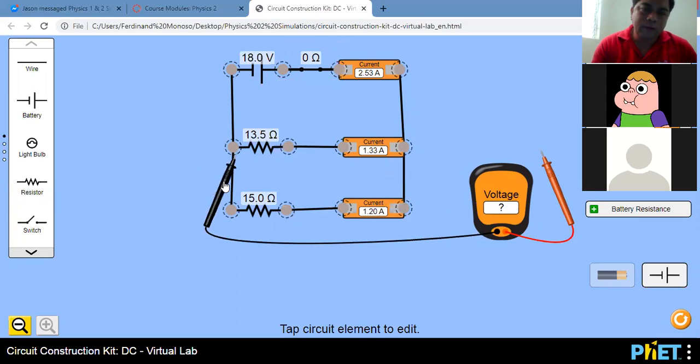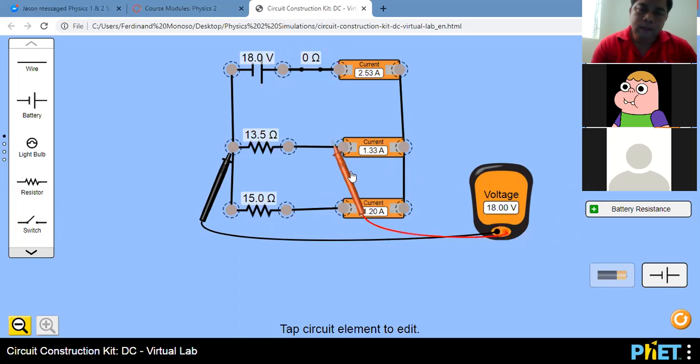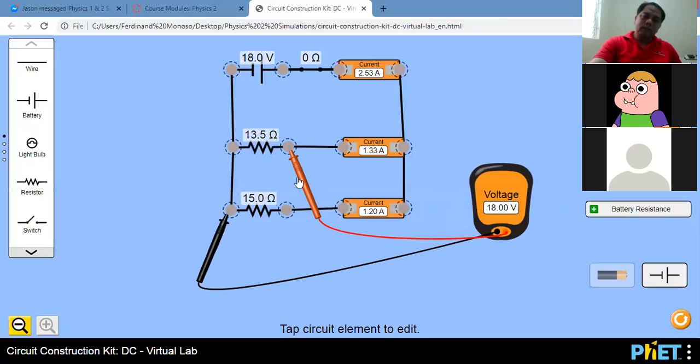Next, we will check our voltage in our resistance one. So this is our voltage for resistance one. We have 18 volts. So V1. Our V2 is also 18 volts. So this is V2, 18. Our earlier value for V1 is also 18. Our I1 is 1.33 and I2 is 1.2.